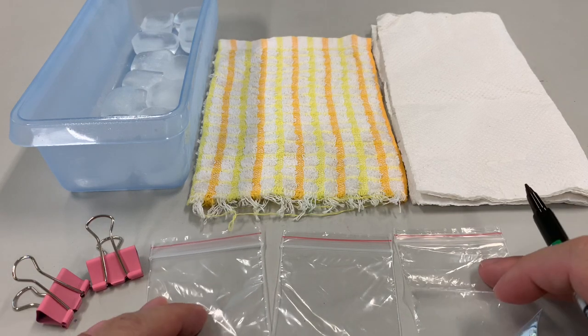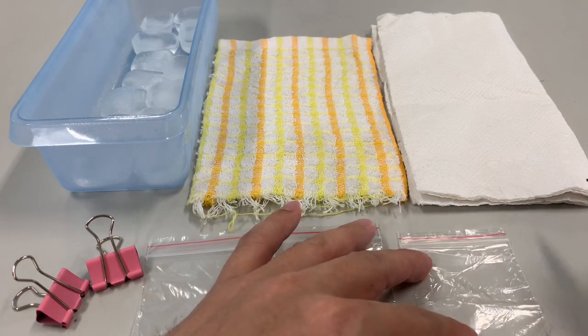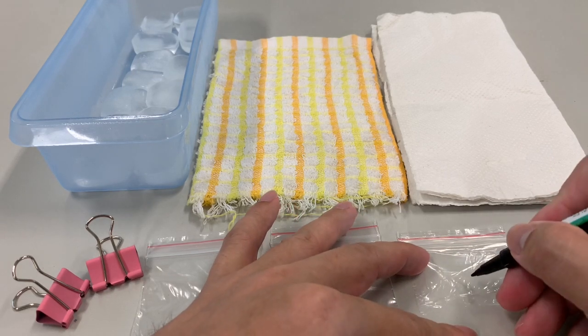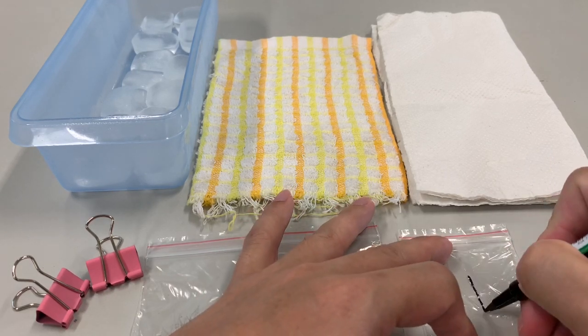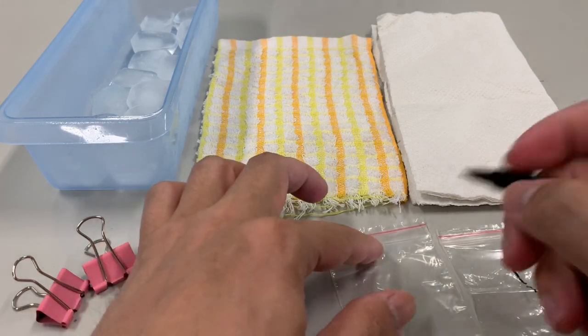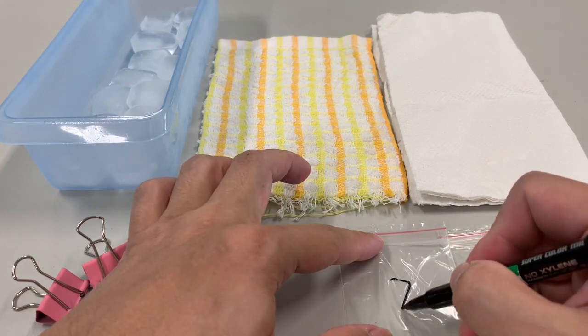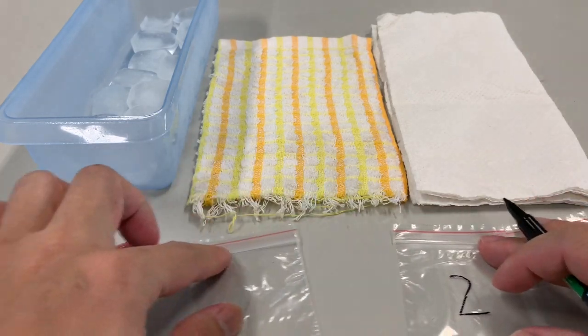So we're gonna have three plastic bags over here to contain the ice cubes. Then we're gonna label them. Plastic bag number one, number two, and number three.